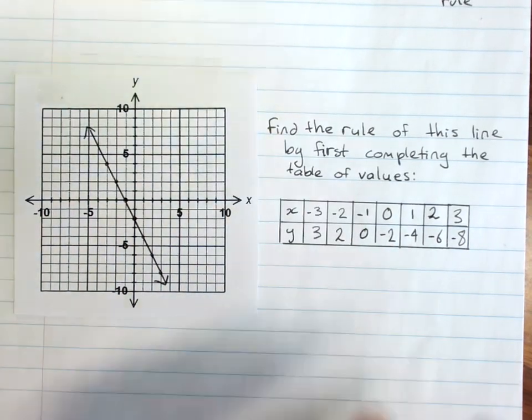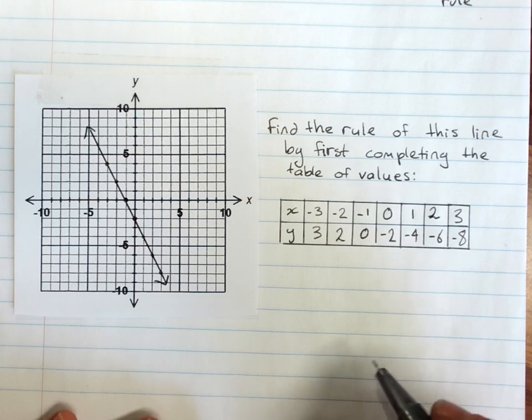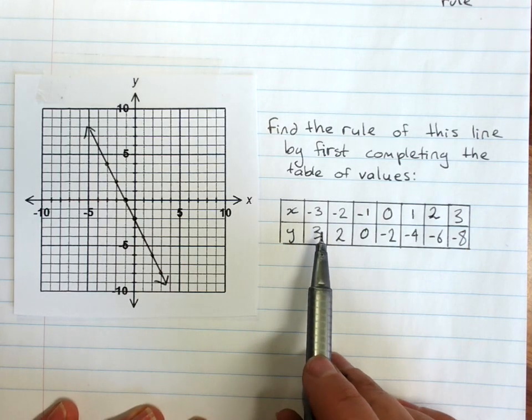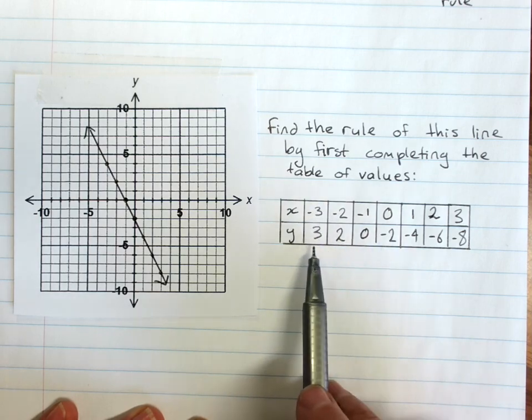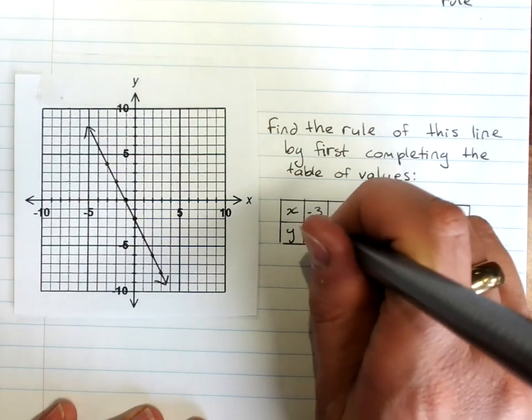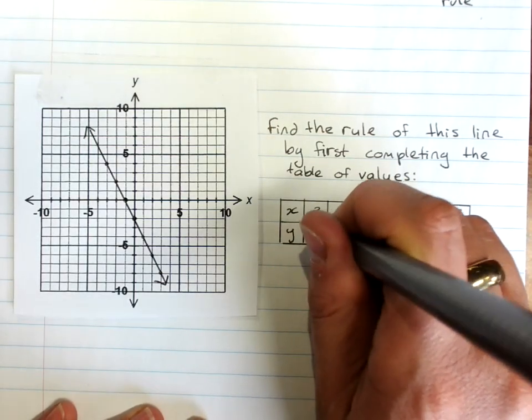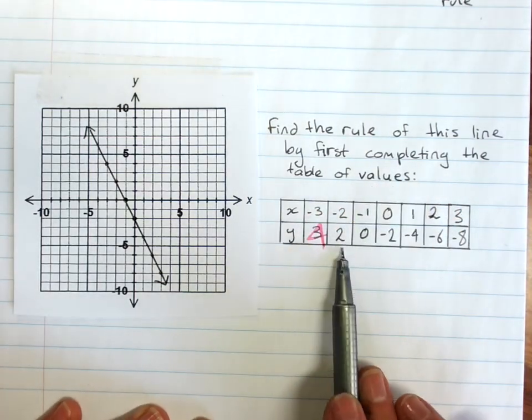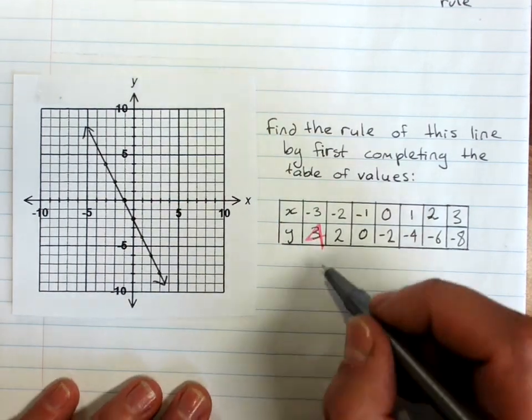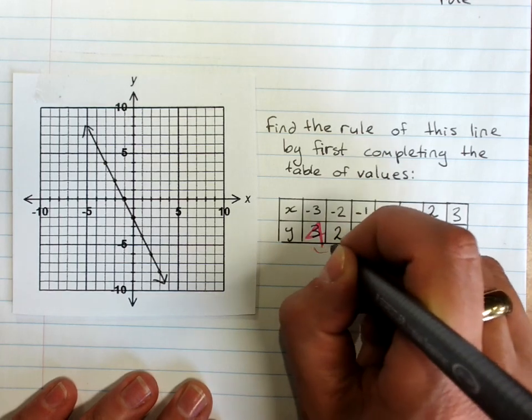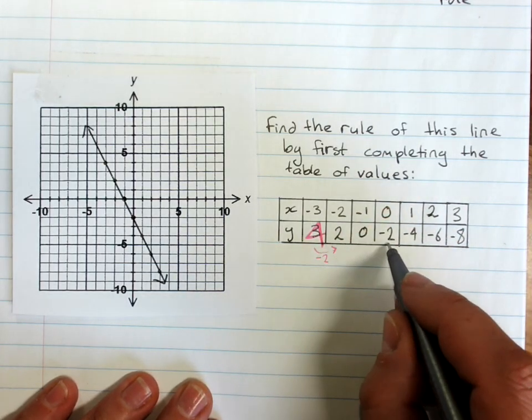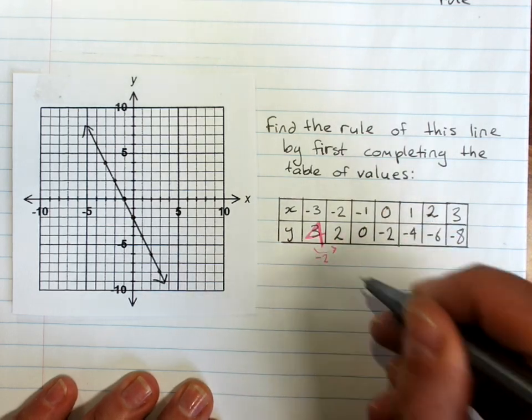Now that you've got a table of values, you can use the same—oh hang on, one. I've miswritten one. You see how I can tell? Because my pattern's not right. That's negative three, four. So just by checking my pattern, which is what I was about to do, I could see that a point was wrong. That's why the pattern is useful. So that's minus two. Are all the others minus two? Yes, they are. So the pattern is minus two.